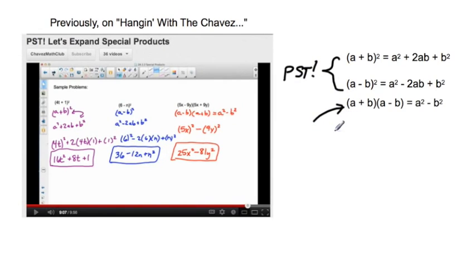And over here we were talking about a difference of squares. So when you have something in the form a plus b times a minus b, where a is the same and b is the same, then you end up with a squared minus b squared because the middle terms cancel out.